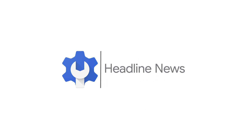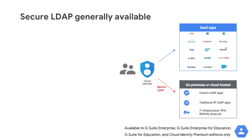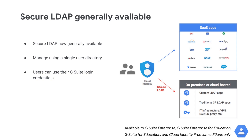Here's the headline news from November. We're making secure LDAP generally available. Secure LDAP lets you manage access to traditional LDAP-based apps and IT infrastructure using the G Suite Identity and Access Management Platform. This means you can use a single layer user directory to manage access to both your SaaS apps and traditional LDAP-based apps and IT infrastructure, and your users can use the same login credentials for more apps and services.